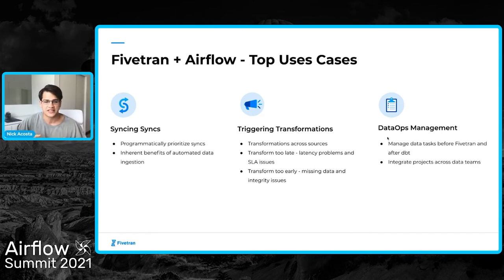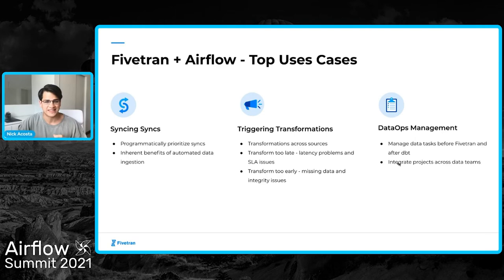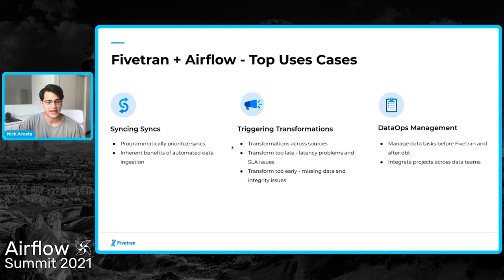Third, organizations orchestrating ELT in Airflow are not just doing ELT — there are data activities happening both before data reaches Fivetran and after data is transformed by DBT. Airflow provides one tool to manage all of these data tasks that comprise their data pipelines, which is really valuable. This also facilitates collaboration across different data teams and data products. The first two benefits — synchronizing data syncs and triggering transformations — are unique to that combination of Fivetran and Airflow.